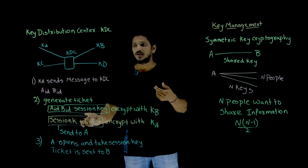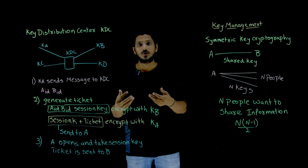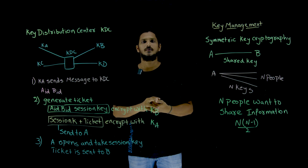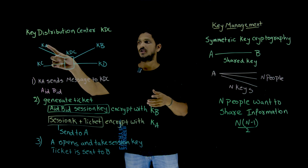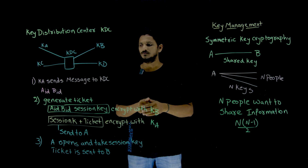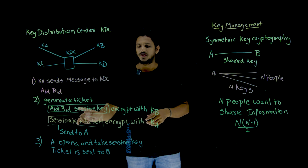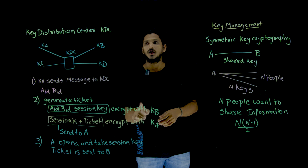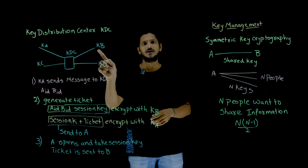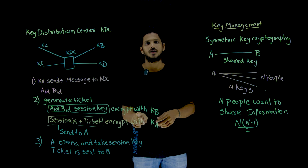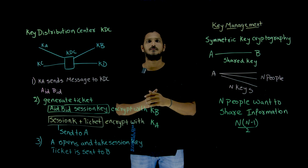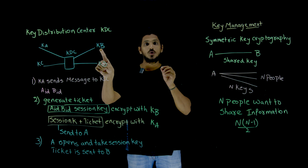We call this a session key because this key is used only for this session. After some time, if A and B want to send messages again, a new session key has to be generated. The ticket — containing AID, BID, and session key — is encrypted with B's key KB, which is the secret key shared between KDC and B. This ticket can be decrypted only by B, because KB is held only by B.